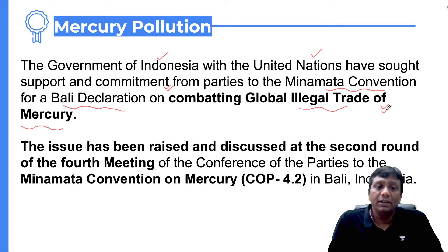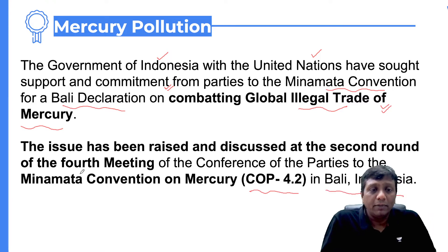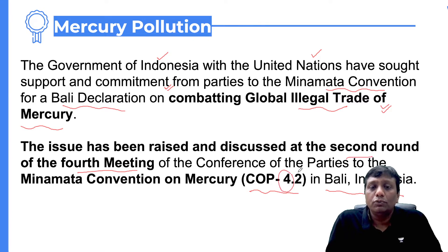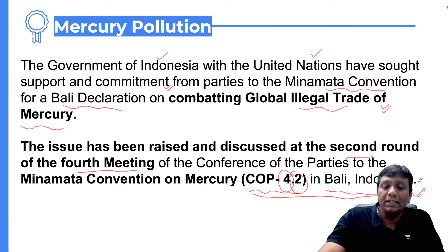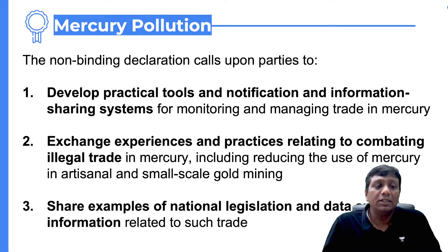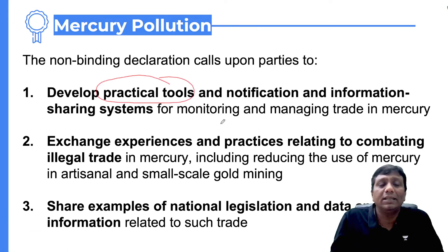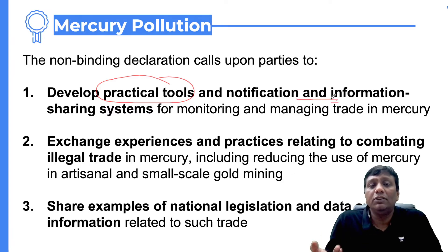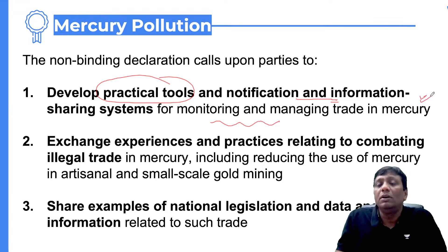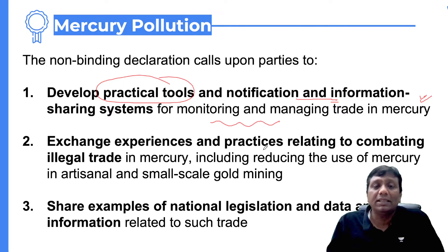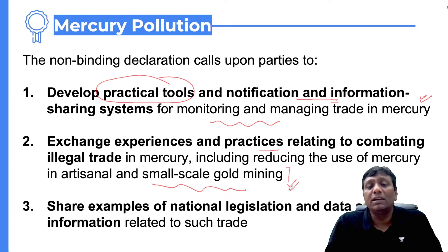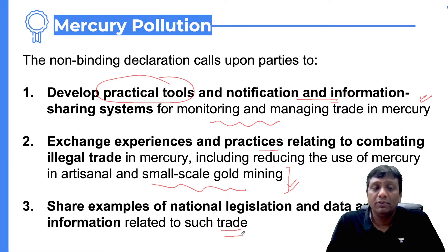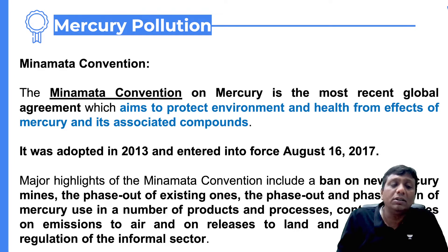This issue was raised and discussed in COP 4.2, held in Bali, Indonesia — the fourth meeting, second round. The non-binding Bali declaration calls upon parties to develop practical tools, share notification and information between countries for monitoring and managing mercury trade, exchange experiences and practices combating illegal trade in mercury — even in small-scale gold mining purposes. National legislation and data should be shared across countries for such trades.